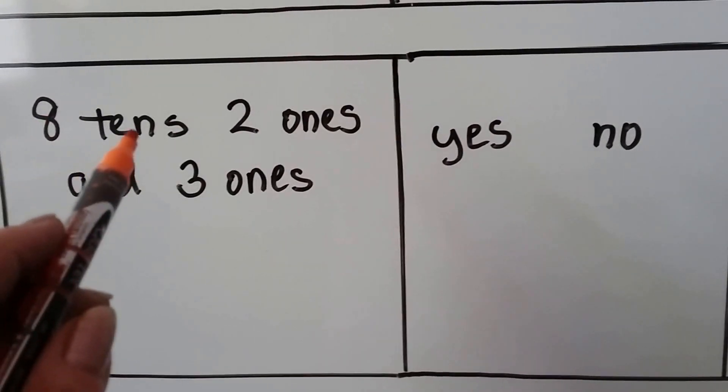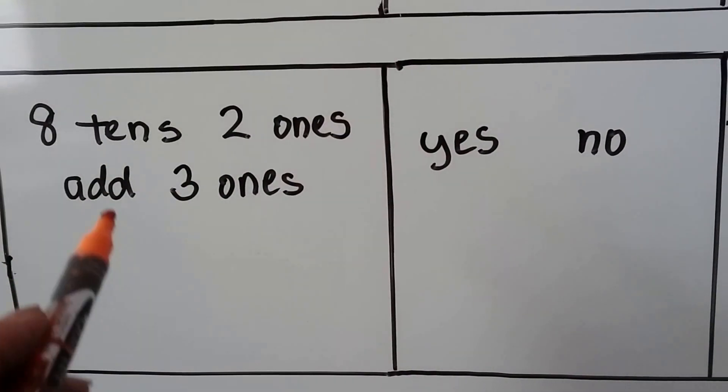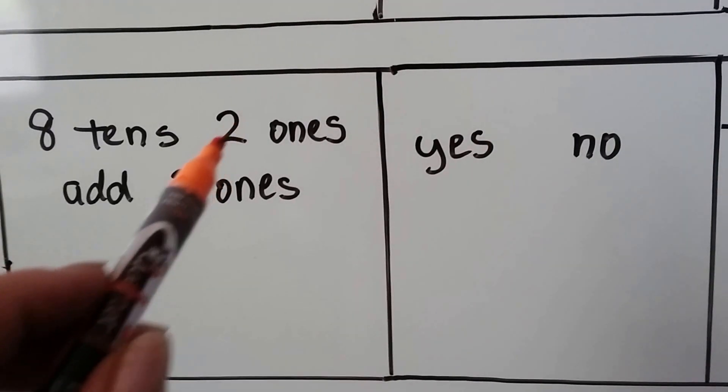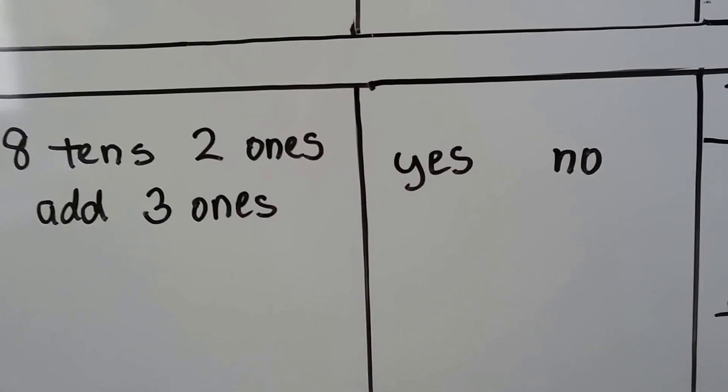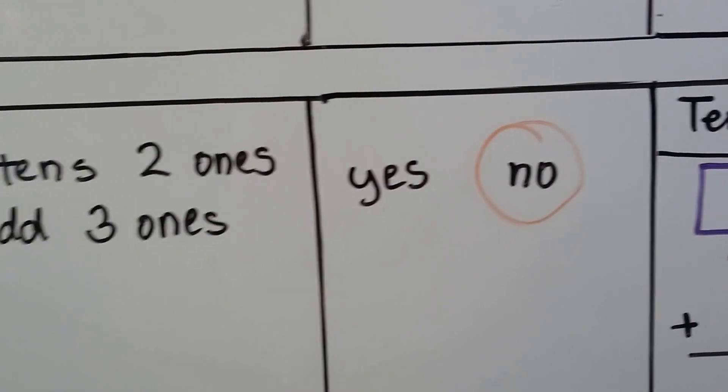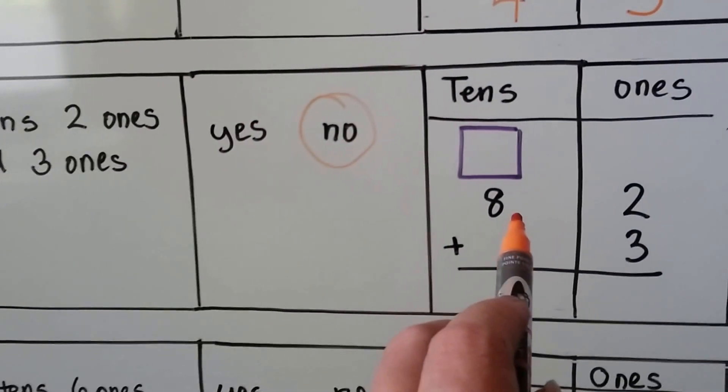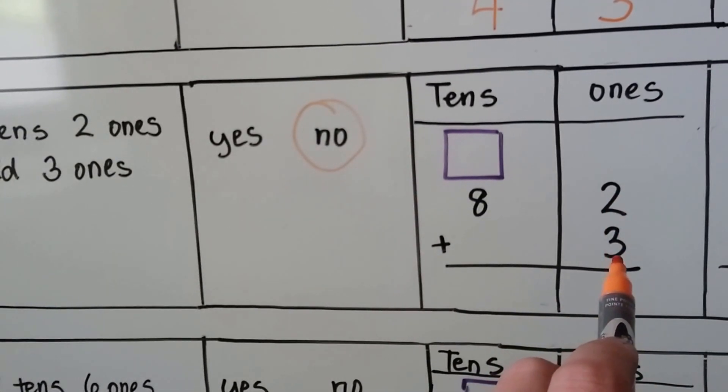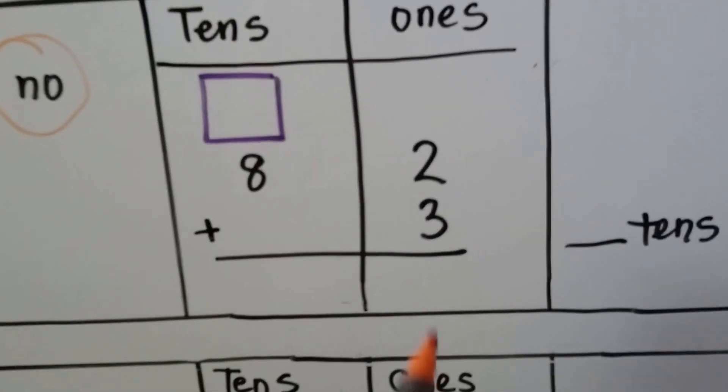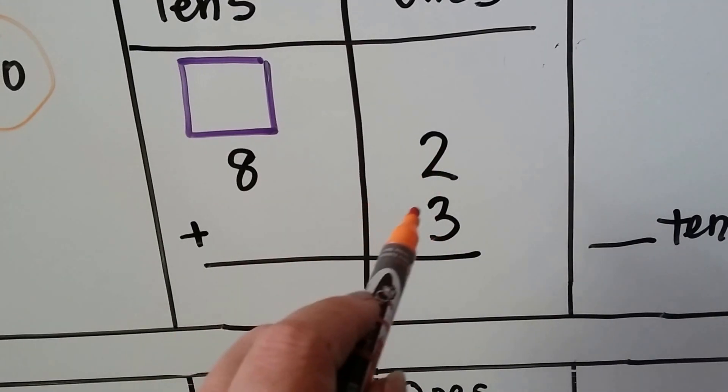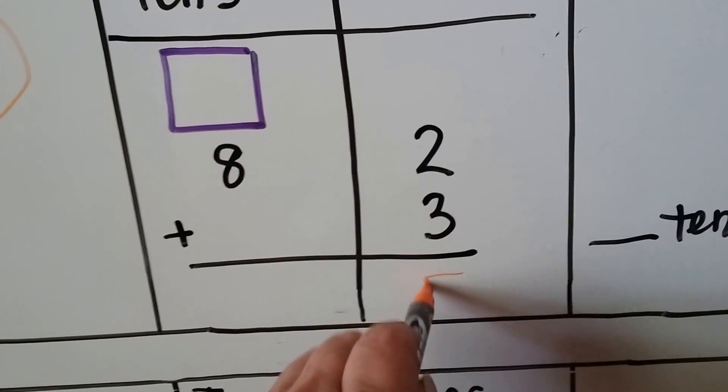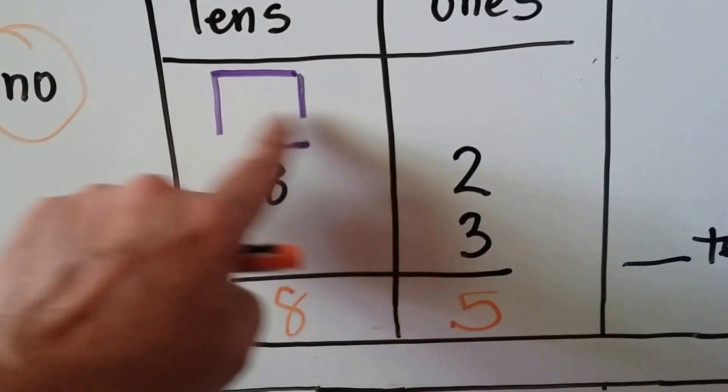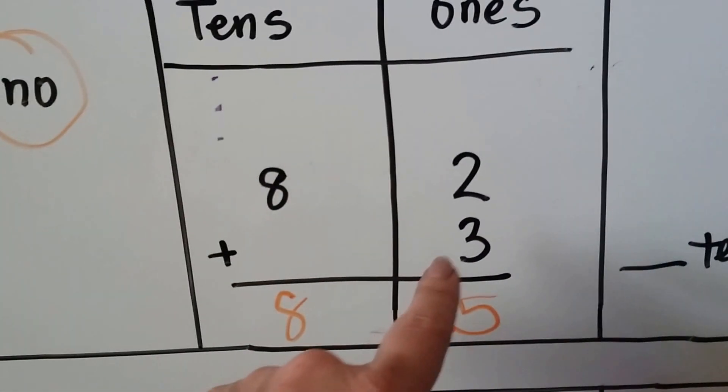Let's see if we need to regroup. We have 8 tens and 2 ones. Do we need to regroup if we add 3 ones? Are 2 ones and 3 ones enough to make a 10? No. That's not enough to make a 10. So we don't need to regroup. No. We put our 8 tens and our 2 ones in the correct place value. We put our 3 ones in the correct place value. When we go to add them, 2 plus 3 is 2, 3, 4, 5. We just bring the 8 down. We didn't even need this, did we? Because we didn't need to regroup, did we? We only had 5 ones.